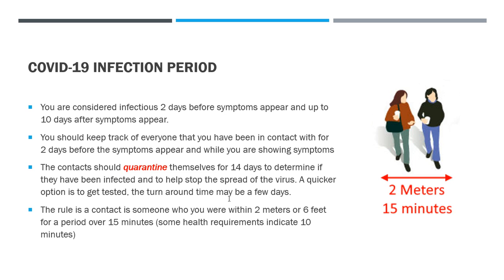A quicker option to quarantine is to get tested — the turnaround time may be a few days. Contacts should quarantine themselves for 14 days to help stop the spread of the virus. A contact is someone you were within two meters or six feet for a period over 15 minutes. Some health requirements indicate 10 minutes — that depends on your health facility's rules.